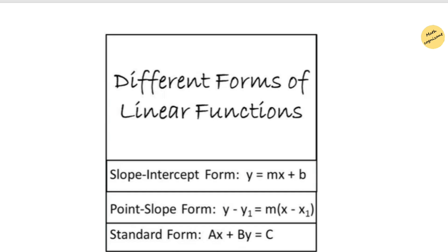Linear equations can be written in different forms. The slope-intercept form has the formula y equals mx plus b. The point-slope form has the formula y minus y1 equals m times (x minus x1). And the standard form is ax plus by equals c. We will go into detail about each of these forms with examples.